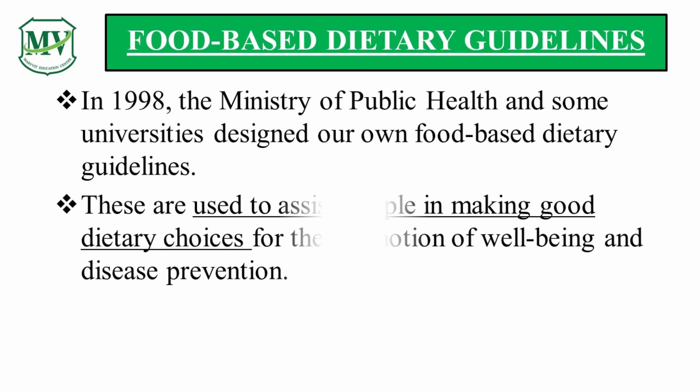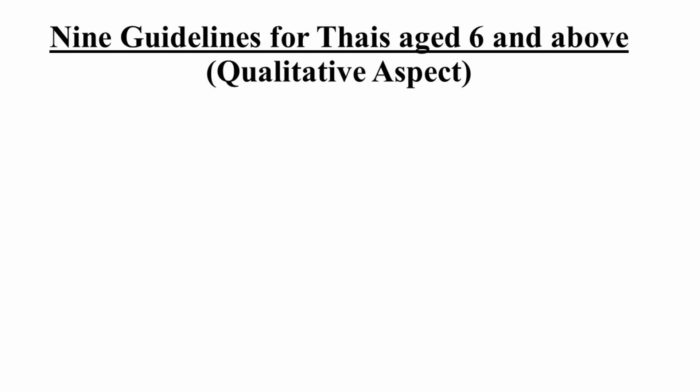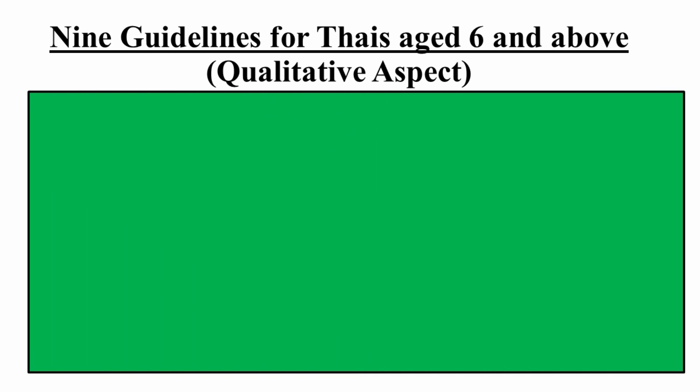Food-Based Dietary Guidelines are used to assist people in making good dietary choices for the promotion of well-being and disease prevention. There are two aspects in the Food-Based Dietary Guidelines: Qualitative and Quantitative Guidelines. First, we will talk about the nine guidelines for those aged 6 and above. This is the qualitative aspect of Food-Based Dietary Guidelines. Please read after me.